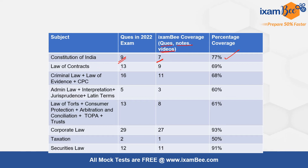Similarly, in Law of Contracts, there were 13 questions and we had discussed 9 questions in our various course offerings. Now, if you look at the two most important sections of the SEBI legal exam — that is corporate law and securities law — you will see that we have provided more than 90% coverage of these topics. From Company Law, we have covered 27 questions. And in Securities Law, we had covered 11 questions out of 12 that came in the exam.